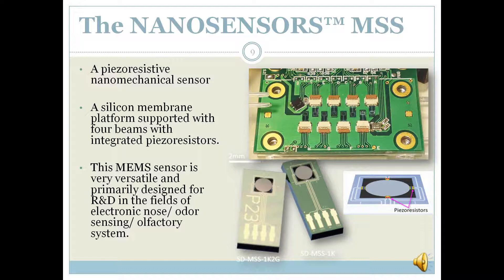Utilized in medical, food, environmental, safety, and security fields, a receptor material coated on the membrane determines the sensitivity and specificity of the individual sensor. Researchers can create original sensors SDMSS1K and SDMSS1K2G, both having a one-millimeter diameter membrane and suitable for R&D in gas and odor sensing. The main difference is membrane thickness and die footprint. For gas/odor sensing, the membrane is coated with a receptor layer sensitive to volatile organic compounds, applied with an inkjet spotter, spray coater, or manually with a micro-pipette.